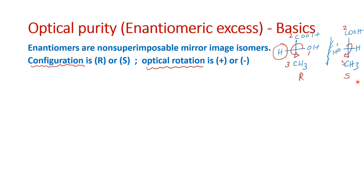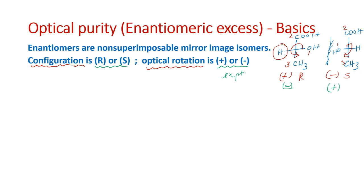This is the representation of the molecule on paper. But if I take this R molecule and place it in a polarimeter — a polarimeter is an equipment that measures optical rotation — any optically active compound will be able to rotate the plane polarized light. So this R, when placed in a polarimeter, can rotate the plane polarized light either to plus or minus. R can be plus or it can be minus. If R was plus, then S will be minus, or if R was minus, S will be plus. These two terms, plus and minus, are experimental values, whereas R and S are theoretical values.